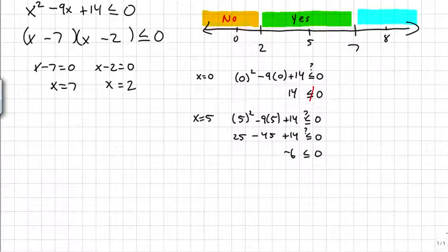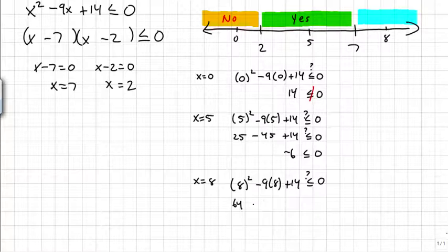And the last number I've got to test is an 8. So when x equals 8, I've got 8 squared minus 9 times 8 plus 14. Is that really less than or equal to 0? So I think that's 64 minus 72 plus 14. I think that comes out to a 6. So 6 is not less than 0, so I'll put a no on that region.